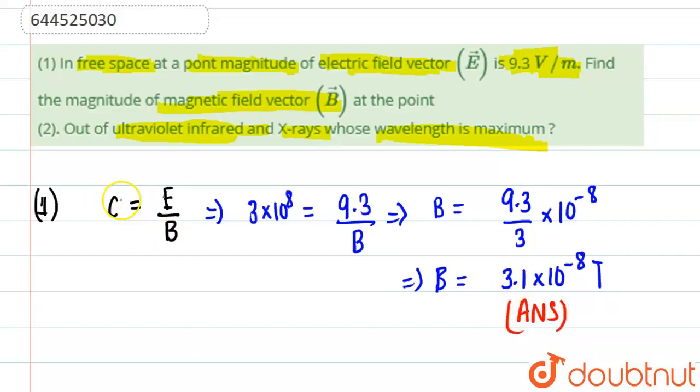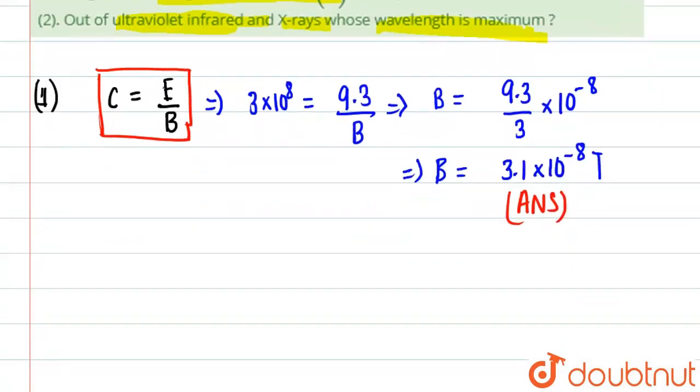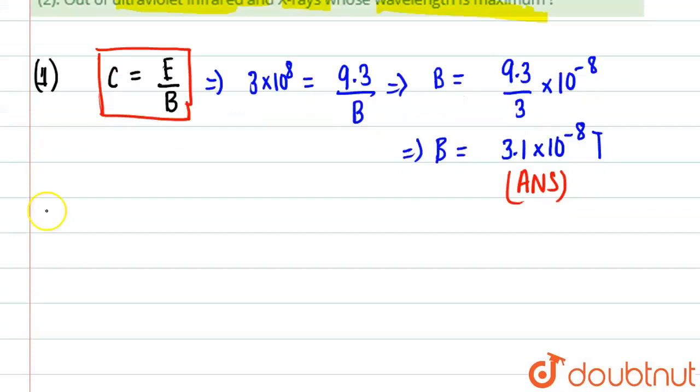We found this by using only one equation - C, the speed of light, equals electric field upon magnetic field. Similarly, we'll do the second part of the question.